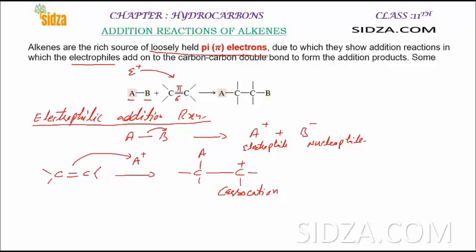In the second step, on the same carbocation, the nucleophile B- will attack on it, and you get a carbon-carbon single bond with atom A over one carbon and atom B over the other carbon. This is how the electrophilic addition reaction occurs in alkenes. The intermediate is the carbocation formed during the electrophilic addition reaction of alkenes.